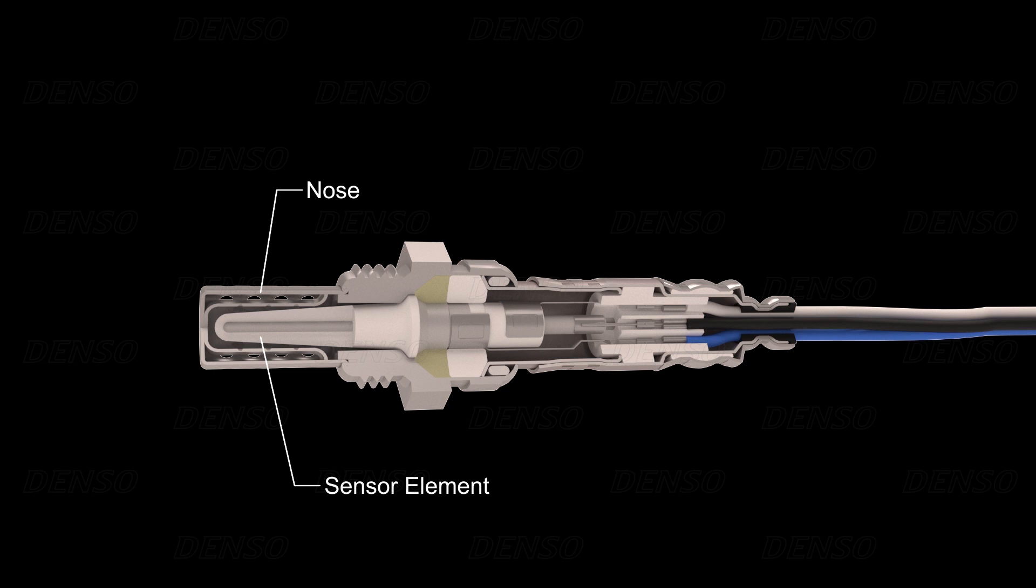When the element reaches a temperature of typically 400 degrees centigrade or more, oxygen ions, which are electrically charged particles, are then able to diffuse through the element. This unique material property makes it possible to measure if there is a difference in oxygen concentrations on either side of the element.